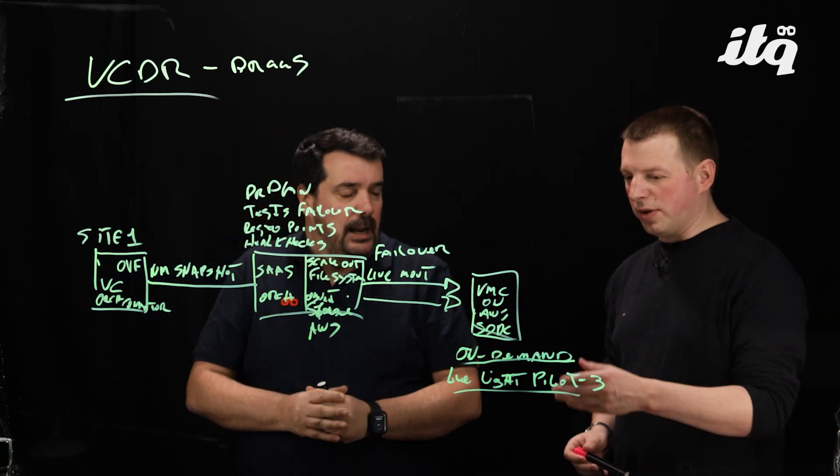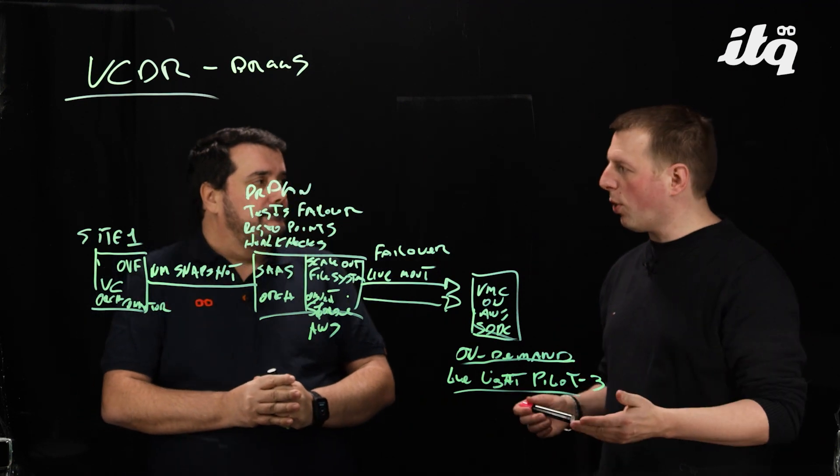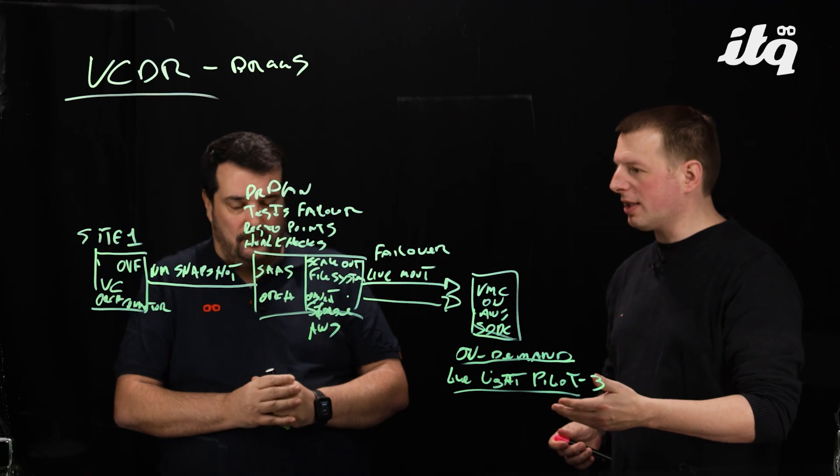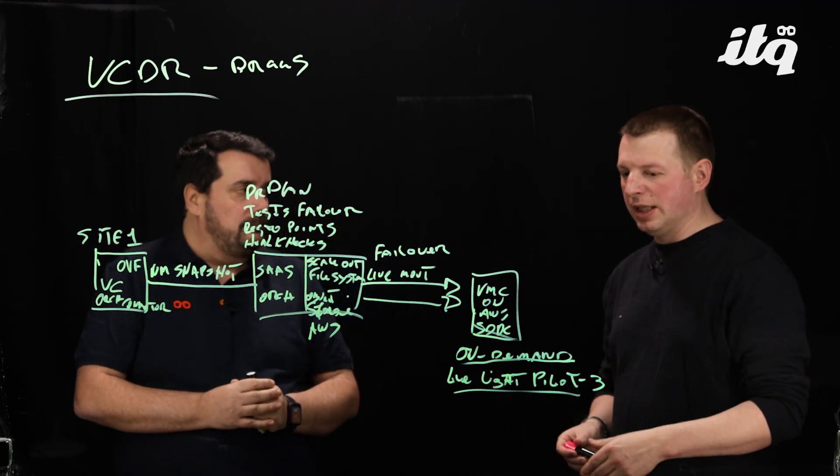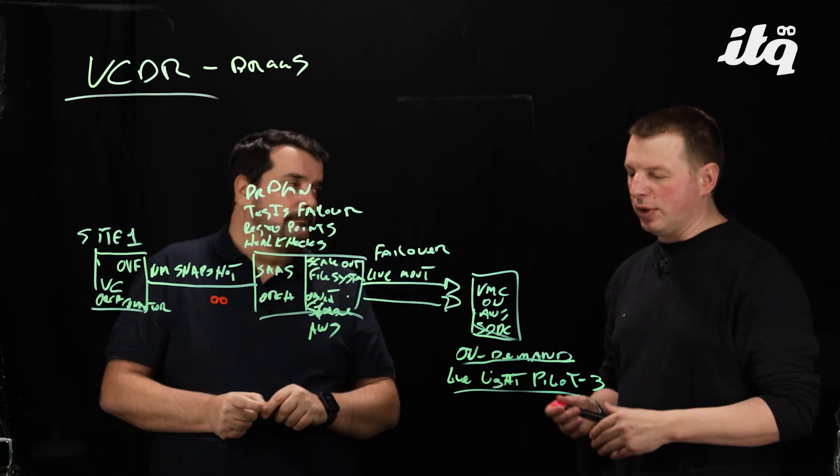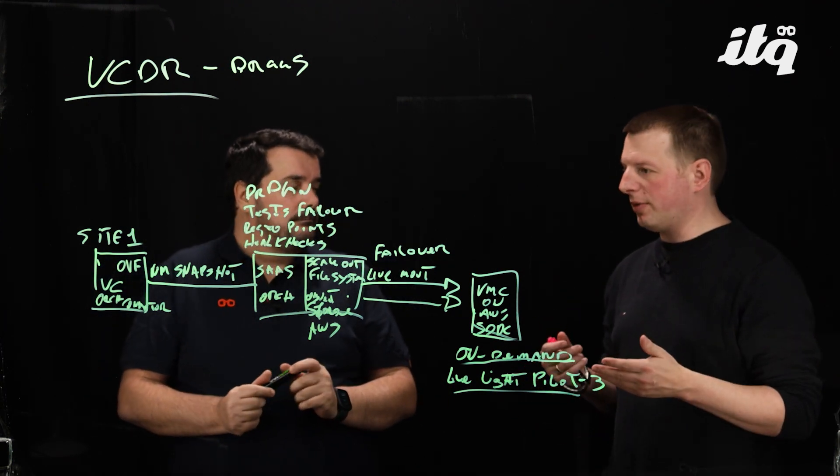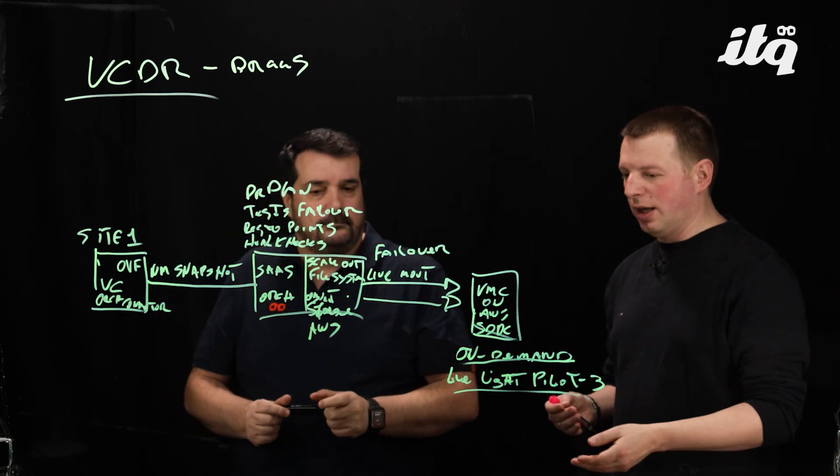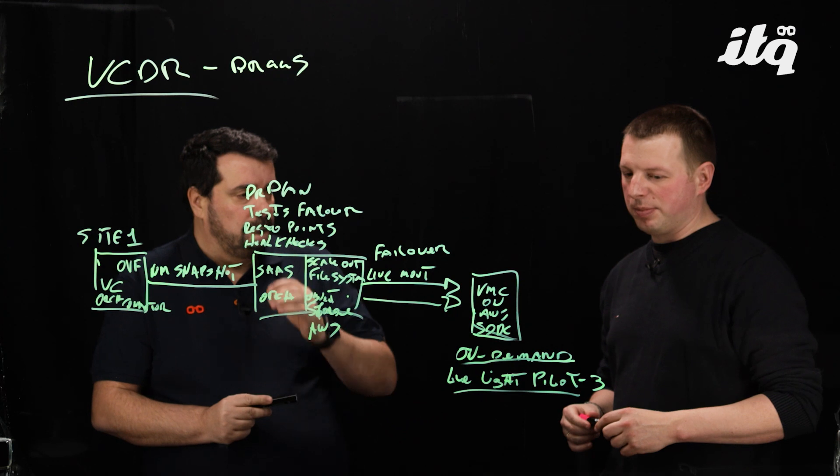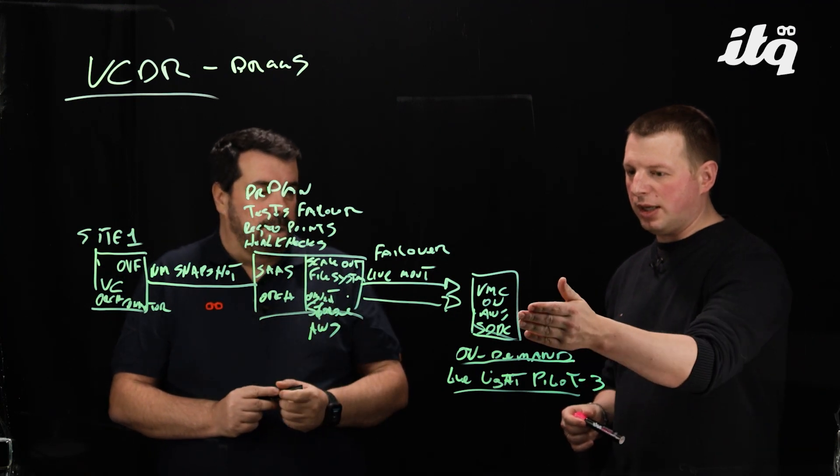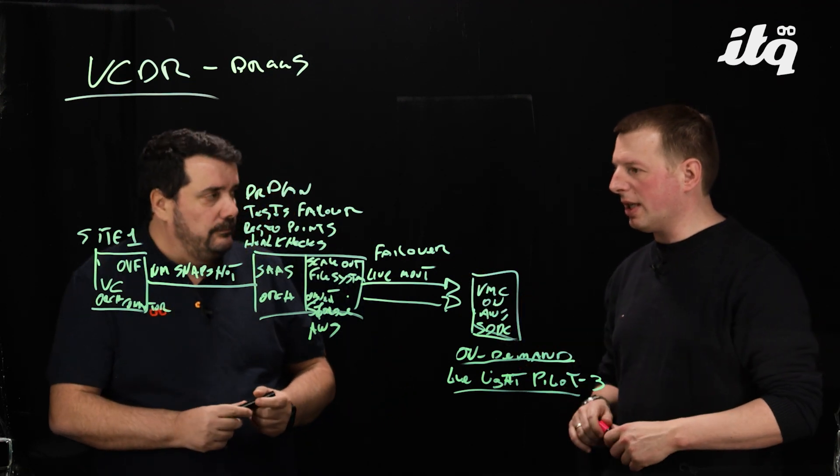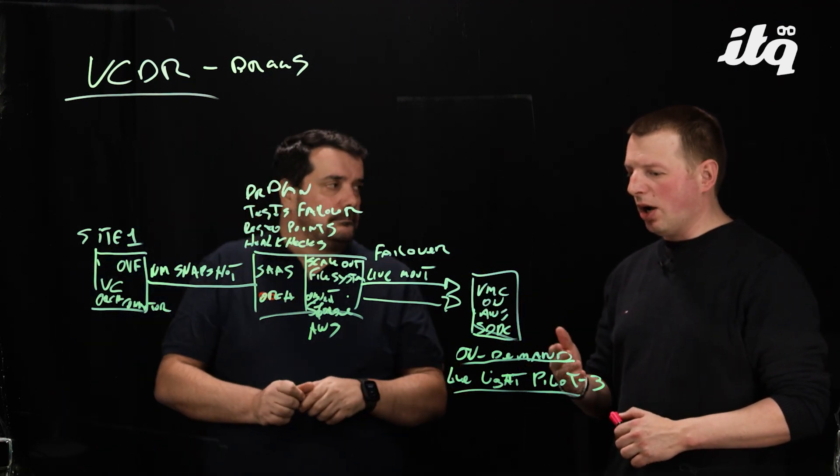So the on demand option is for non-critical workloads that not exists until really a disaster scenario has happened. So I save costs because I consume nothing here. No SDDC is there. And if I have really critical workloads that I have to have immediately working, I have let us say the standby, the pilot light option as a standby SDDC that runs all the time waiting to take over if there is a disaster scenario.